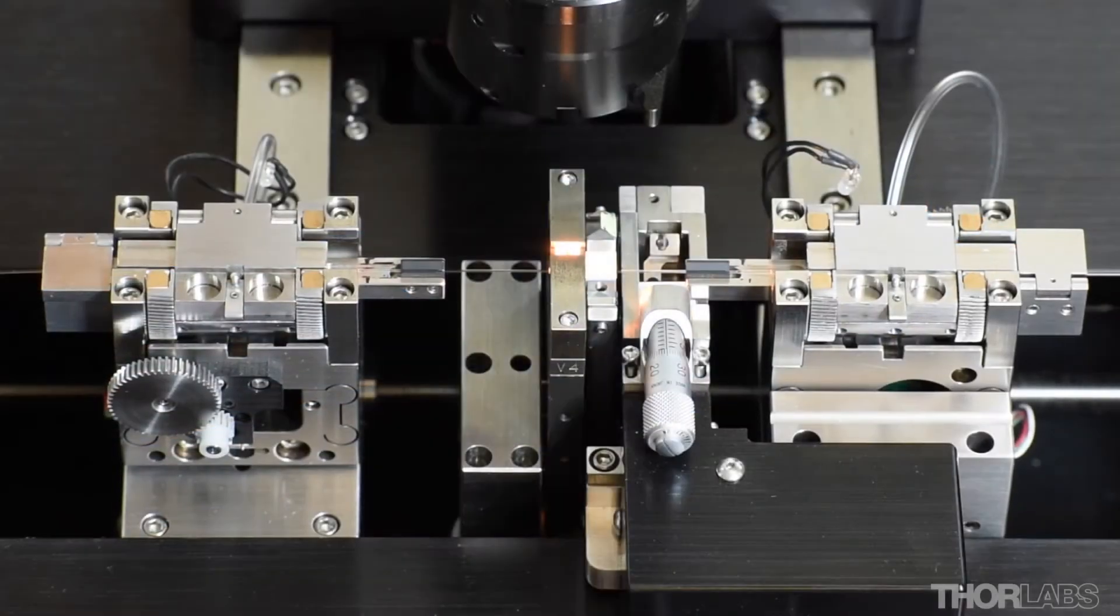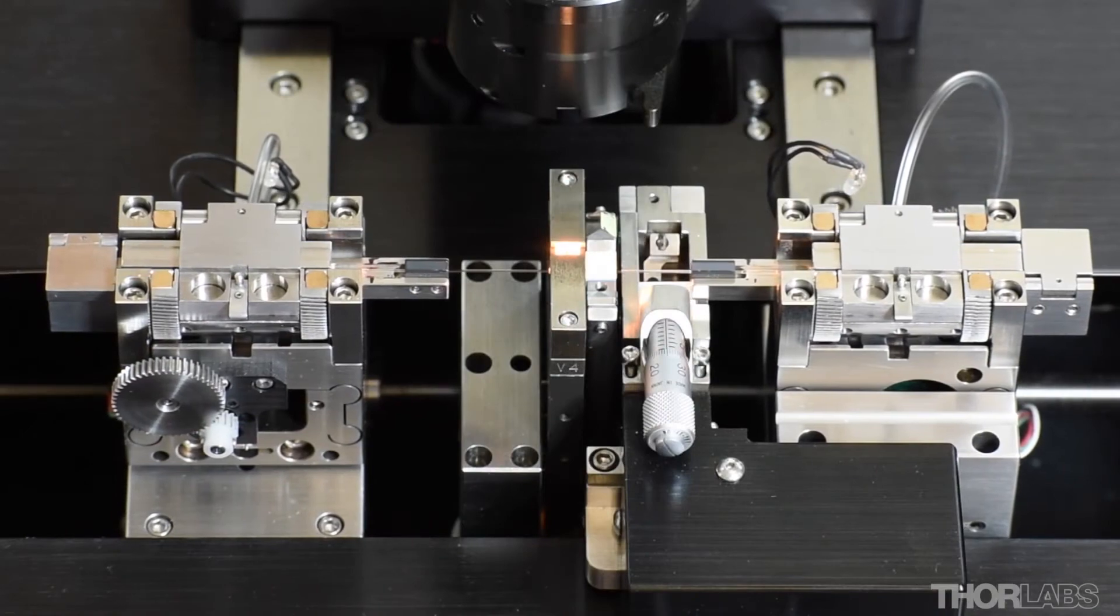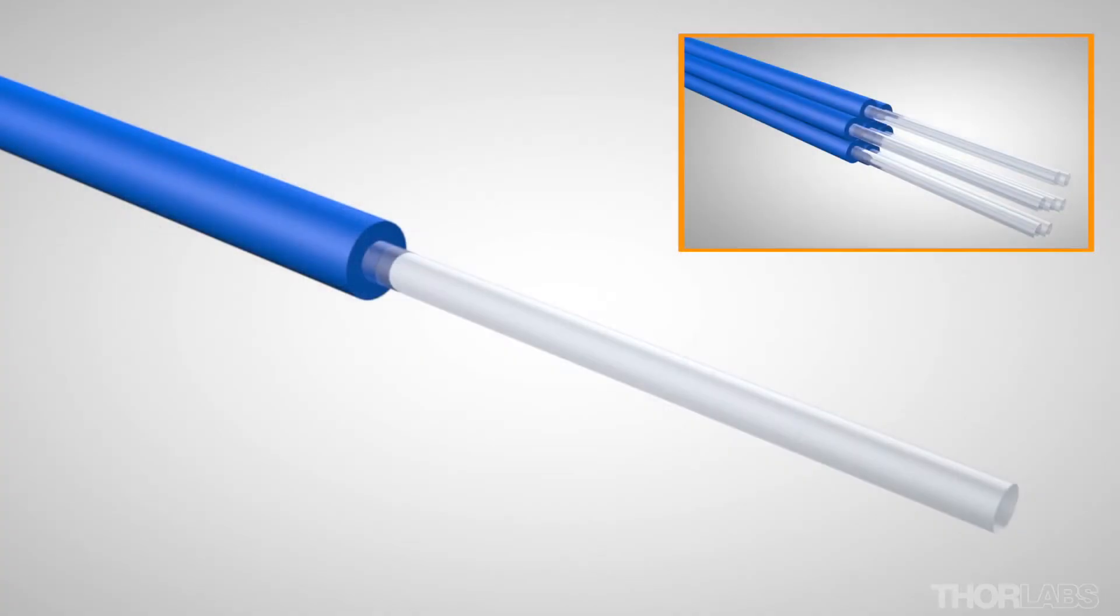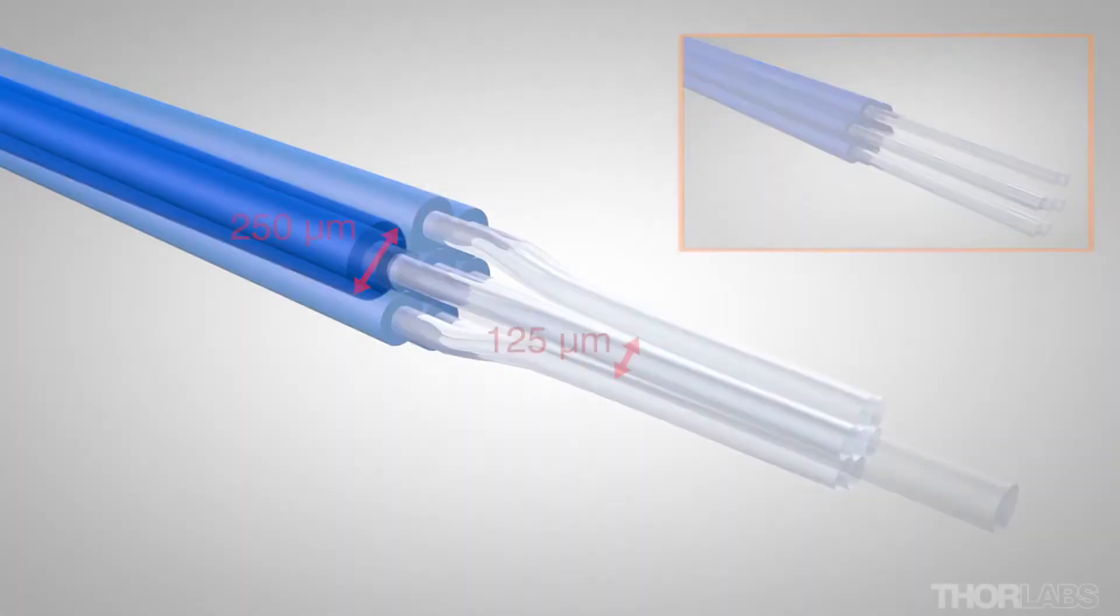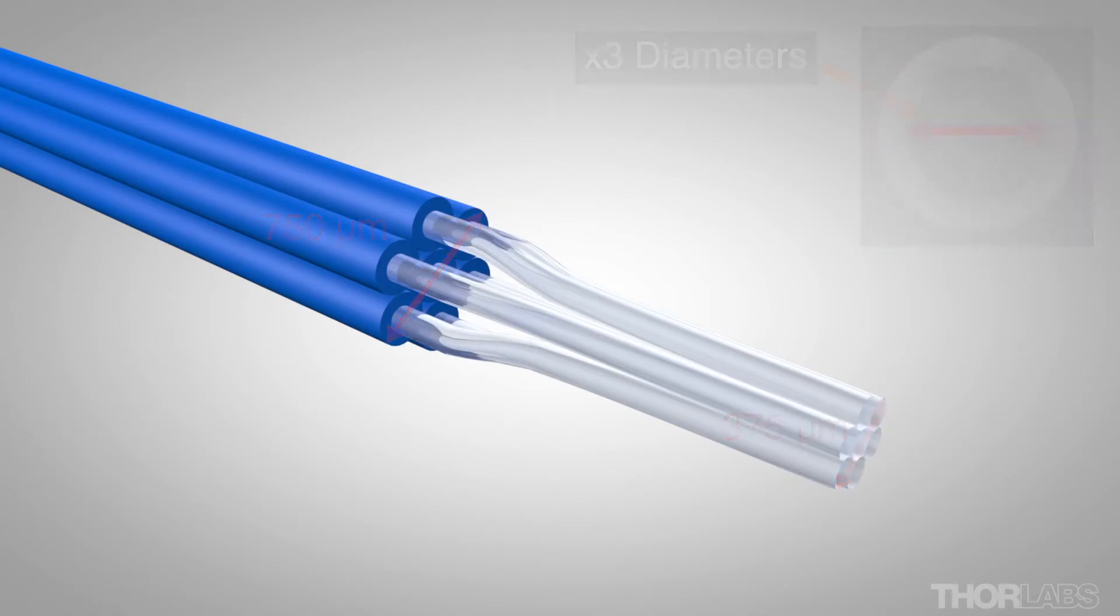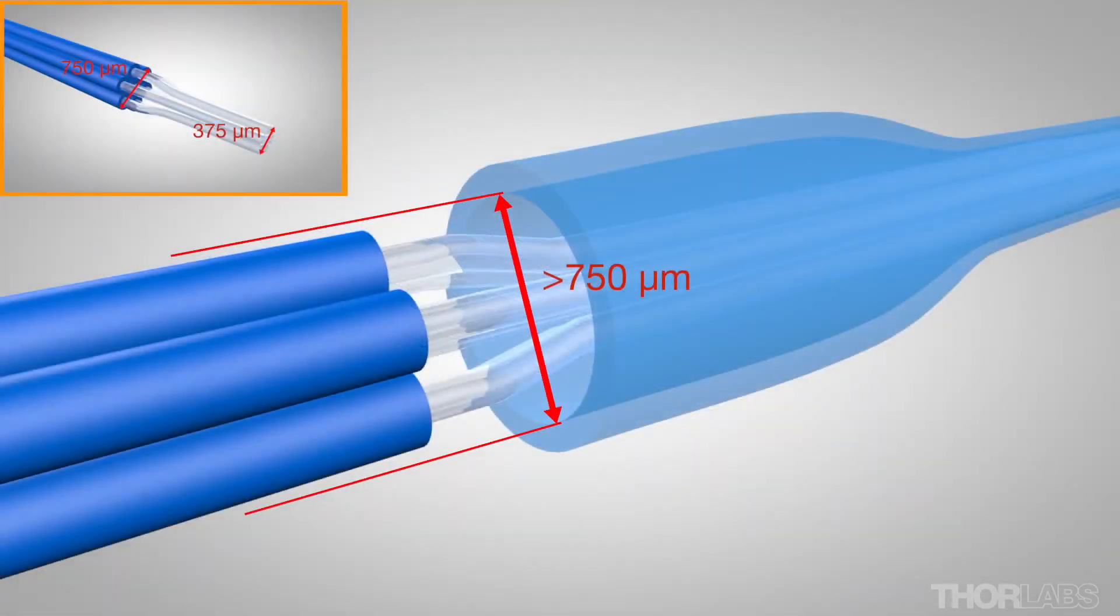For more information on tapering using GPX, please view the dedicated video in the notes. Here, we are making a bundle of seven fibers with 250-micron coating diameter and 125-micron cladding diameter. The capillary tube should have a starting inner diameter over 750 microns and a waist inner diameter a bit larger than 375 microns.